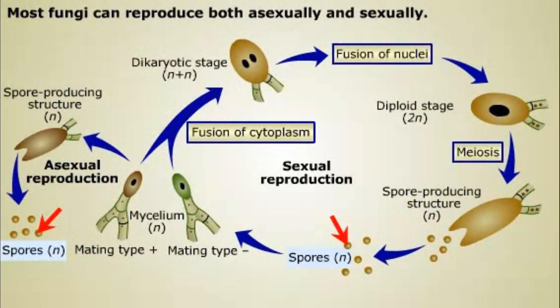Most fungi disperse their offspring by releasing spores. Most fungal spores and the nuclei of most growing fungal mycelia are haploid. When a fungus is growing rapidly and food is plentiful, it's more likely to reproduce asexually. The fungus produces fruiting structures that release spores genetically identical to the parent. The spores may be transported great distances by the wind.